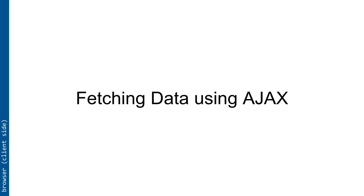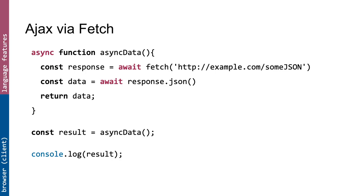Moving on, we looked at fetching data using AJAX. AJAX doesn't really stand for anything useful anymore — essentially all it means is we retrieve resources from a URL without refreshing the page. We can load part of a document and then load something else when something is clicked. This is really useful if you want to do a login without refreshing the page or send chat messages. The way we taught you to do it is using the Fetch API, because it's the nicest way of doing it.